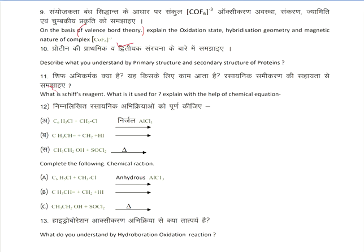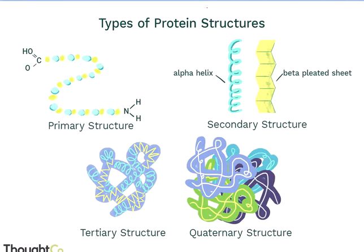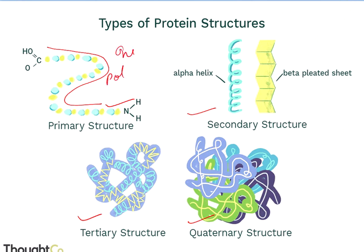Next question: what do you understand by the primary and secondary structure of protein? There are four structures of protein: primary, secondary, tertiary, and quaternary. We have to differentiate only primary and secondary. Primary structure is the basic structure — it is the linear sequence of amino acids, and there is only one polypeptide chain.